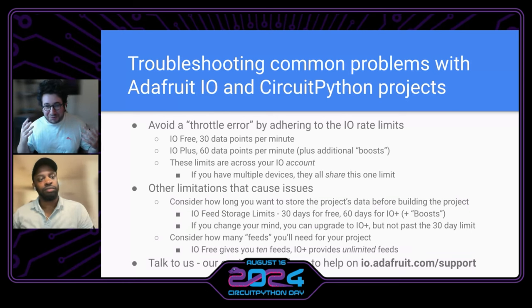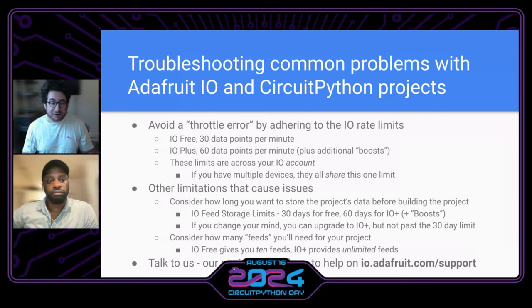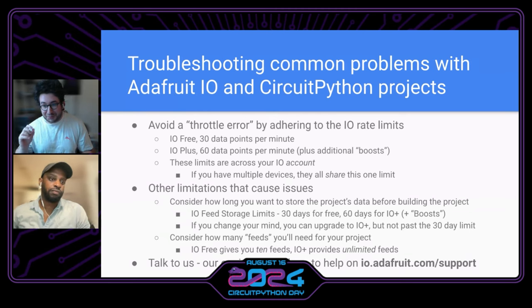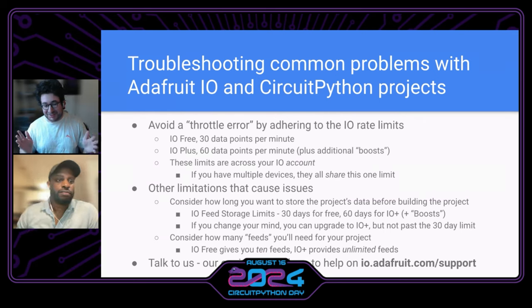The other issue is, before building your project, you need to consider how long you're storing your data. We do 30 days for free, which is a whole month, and then two months for IO Plus — plus you can boost it out. A lot of people do that, which is nice when they're running an experiment for a few months. If you change your mind, you can upgrade to IO Plus. But on day 31 you can't upgrade because the data is removed. So you need to make that decision to expand your rate limits or storage limits before that happens.